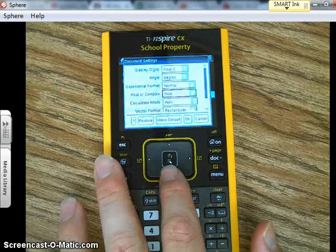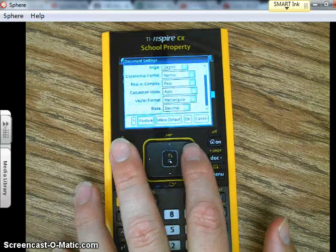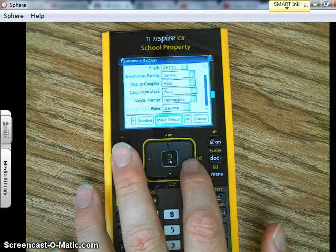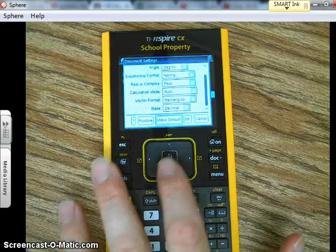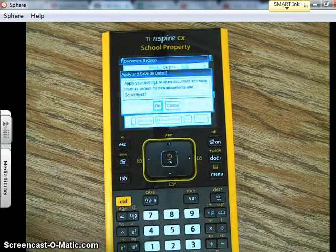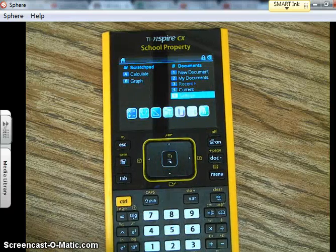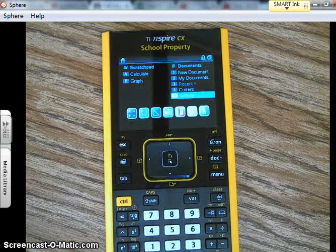And then you want to go down to the bottom and you want to make it the default setting. Click okay, and then it should graph it with no problem.